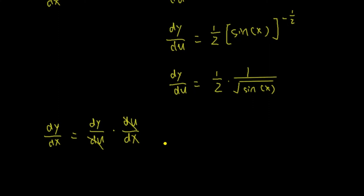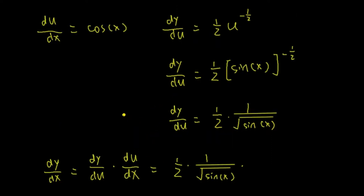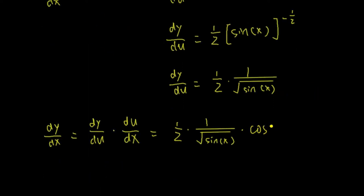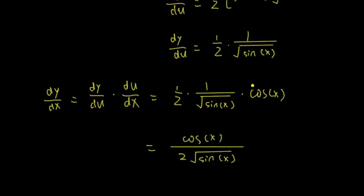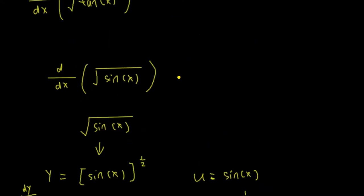According to the chain rule, dy/dx equals dy/du times du/dx. The du and du cancel out, leaving dy/dx. So dy/du is 1 half times 1 over square root of sin, times du/dx which is cos. Grouping this together gives us the derivative of square root of sin.